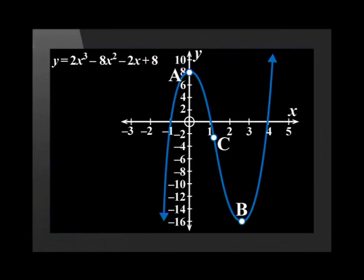Between A and B, the second derivative changes from negative to positive. This point is the point of inflection. And at this point, the second derivative is equal to zero.